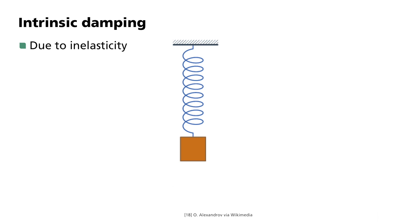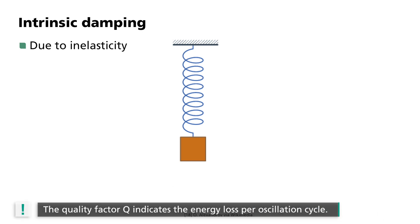This is also the case in the earth. Without inelasticity, earthquake waves would travel forever around the earth. We can also describe this effect using the quality factor q. It indicates the energy loss delta E per oscillation cycle. 1 divided by q equals minus delta E divided by E over 2 pi.